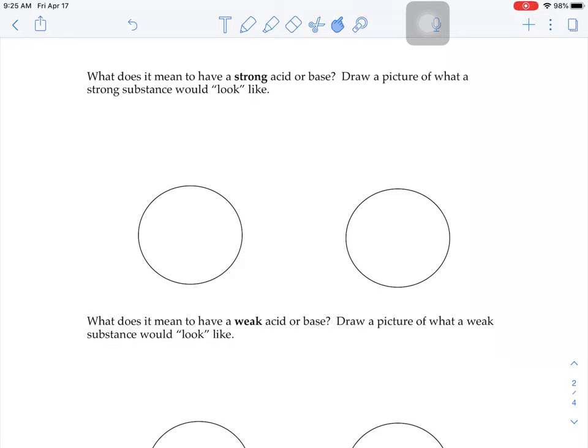Now that we know some characteristics about acids and bases, the rest of today's lesson is going to be learning vocabulary associated with acids and bases. So one of the first big words we're going to look at here is what does it mean to have a strong acid or base?